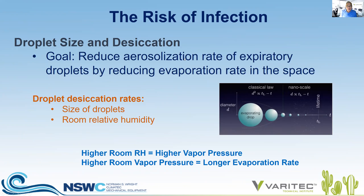We can reduce the aerosolization rate, which will otherwise occur more quickly if we have a dry condition and a high evaporation rate. By creating an environment with proper humidity, we actually reduce the vapor pressure differential between the room condition and the wet droplets emitted — reducing evaporation, thereby maintaining the size of the droplets longer, giving them less float time in the air and a reduced rate of aerosolization. The higher the room RH, the higher the room vapor pressure, and the longer the evaporation rate, causing the precipitation rate of larger particles to begin to dominate.